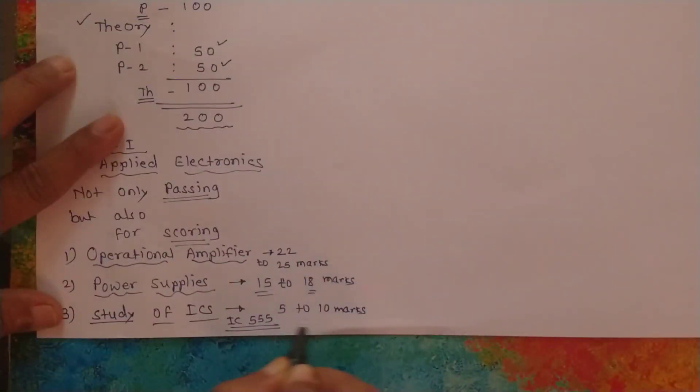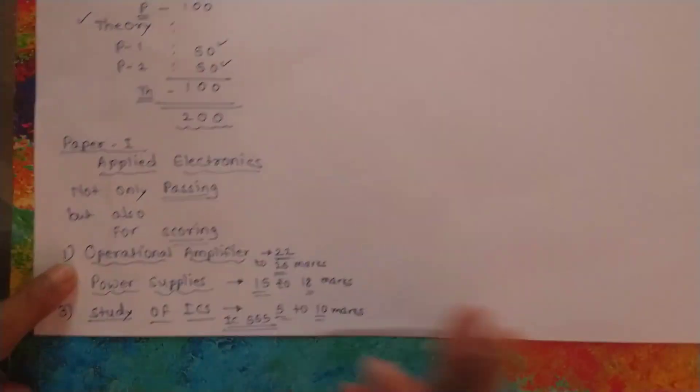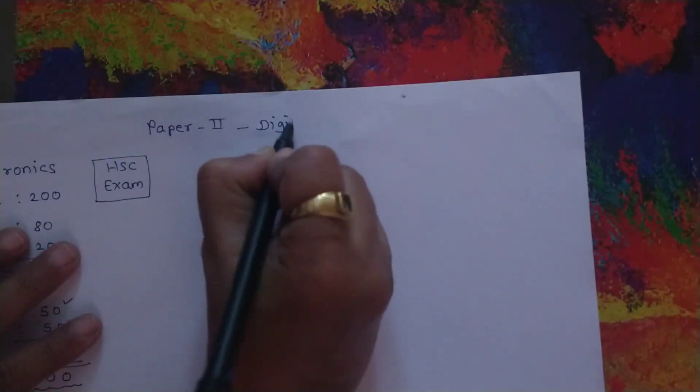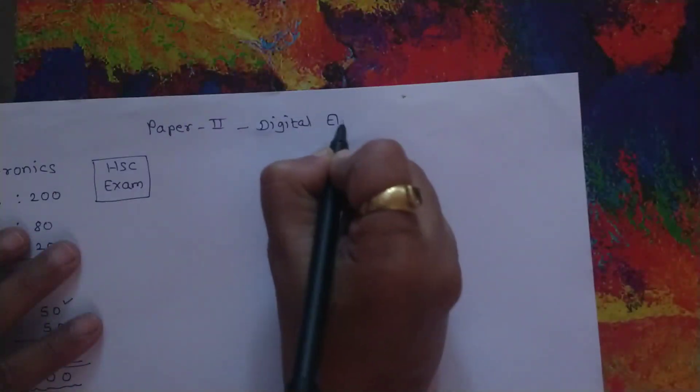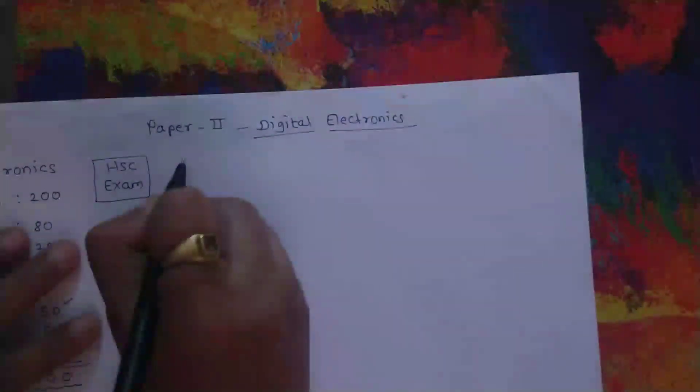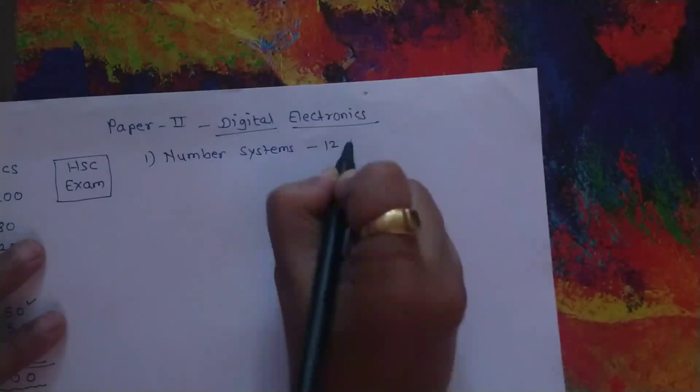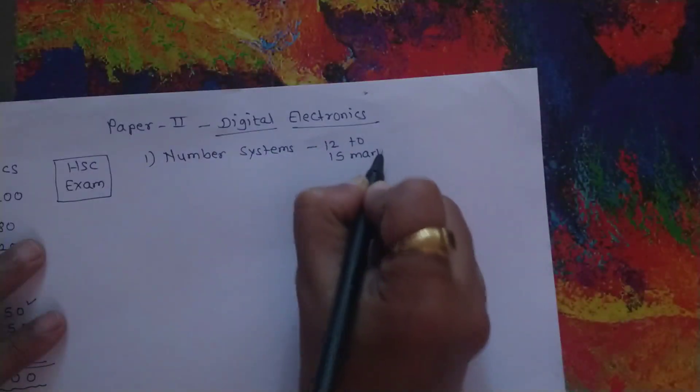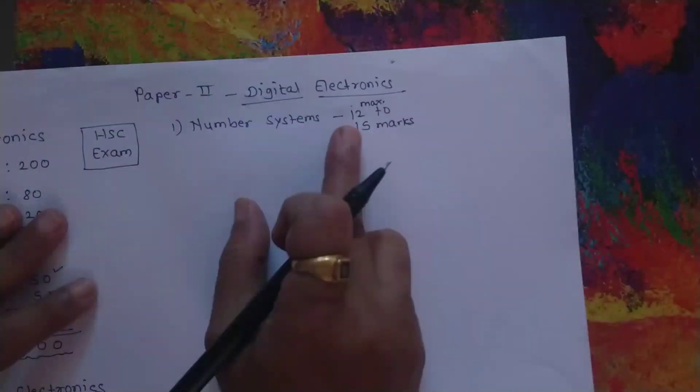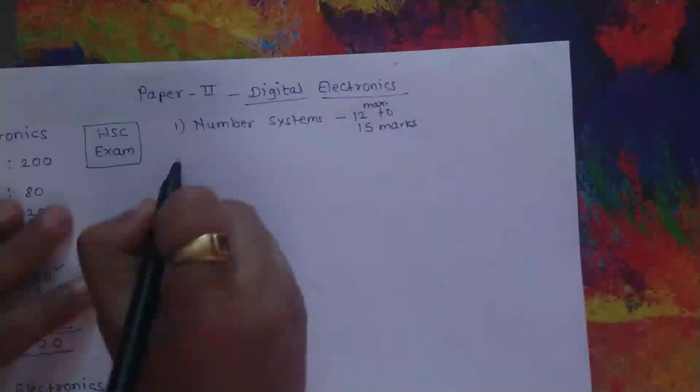These three chapters are of most importance for scoring in applied electronics. For Paper 2, which is the digital electronics part, you can study hard for the easiest chapter, number systems, where it gives you maximum 12 to 15 marks.